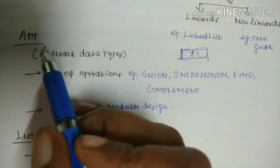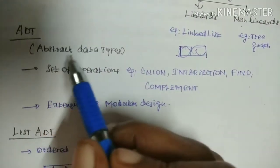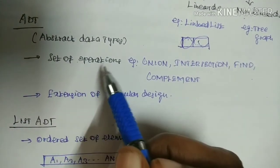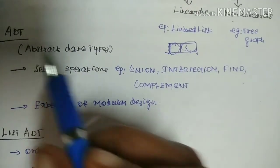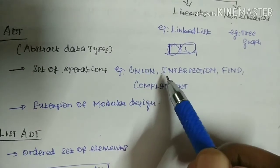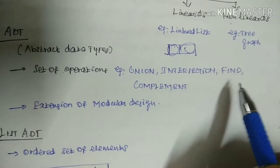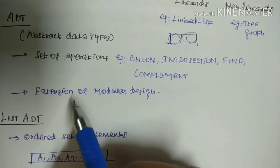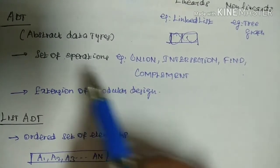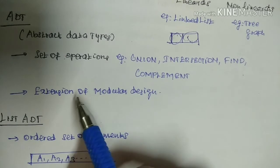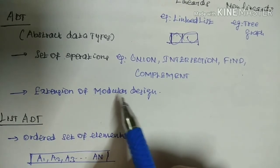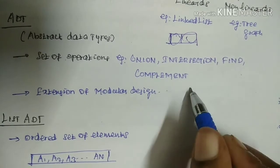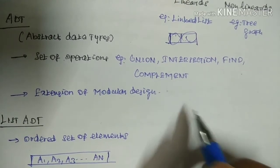Next, ADT — Abstract Data Type. ADT is a set of operations such as union, intersection, find, complement. It is the extension of modular design. A module is nothing but a logical unit, and ADT is an extension of that modular design concept.